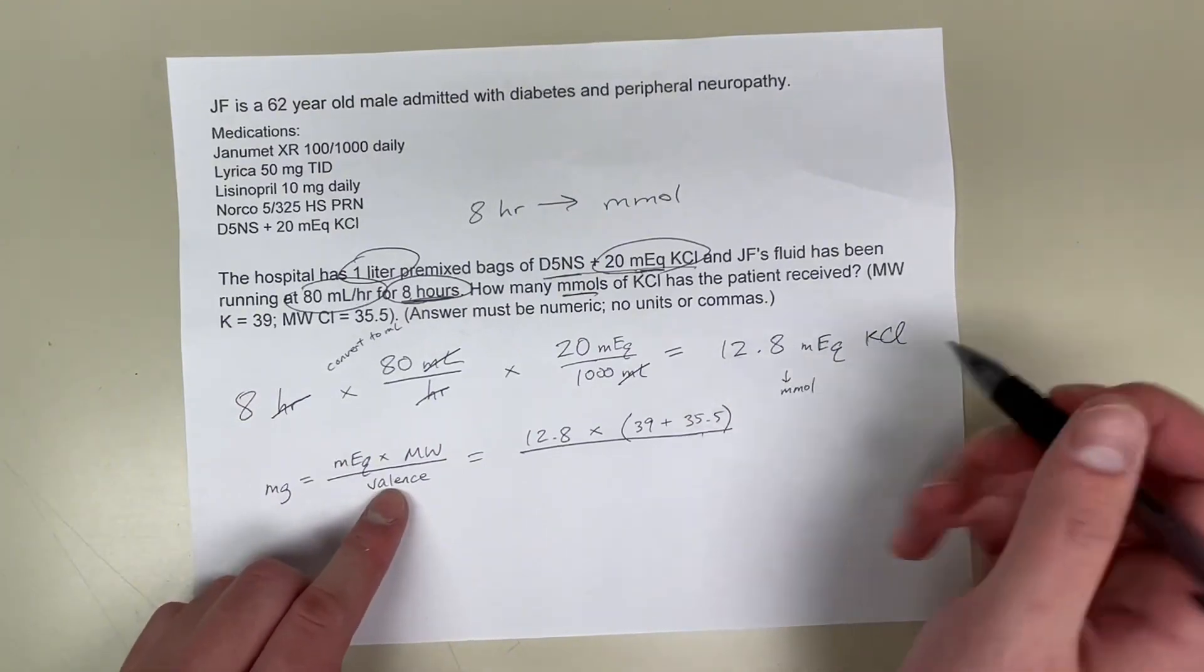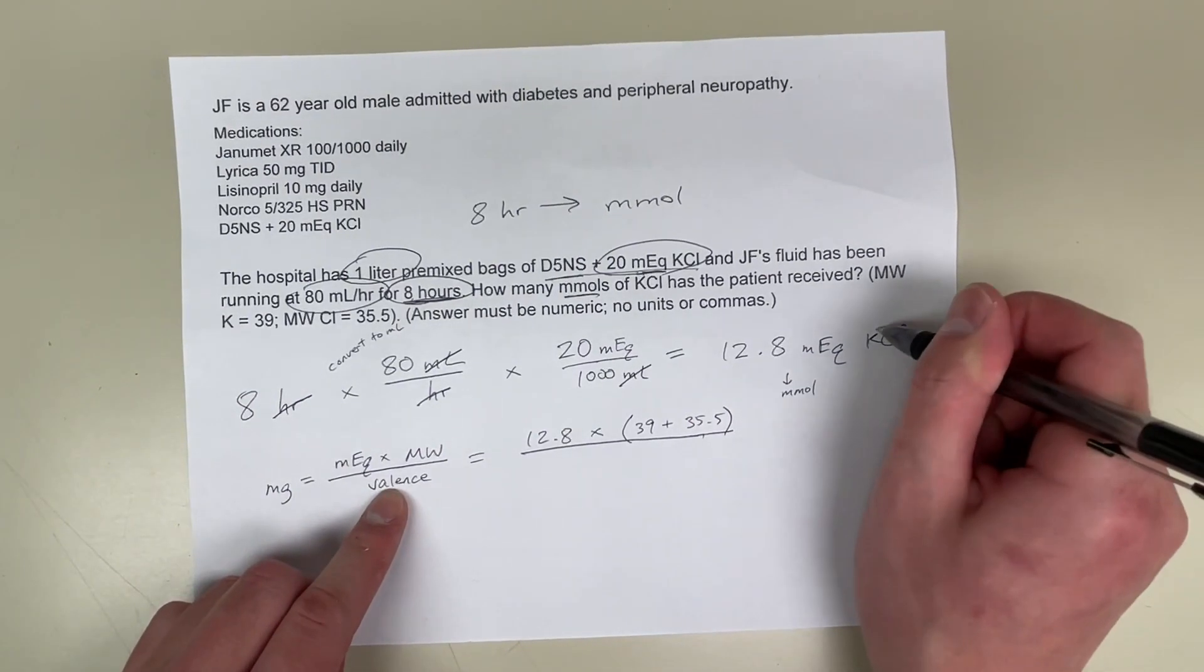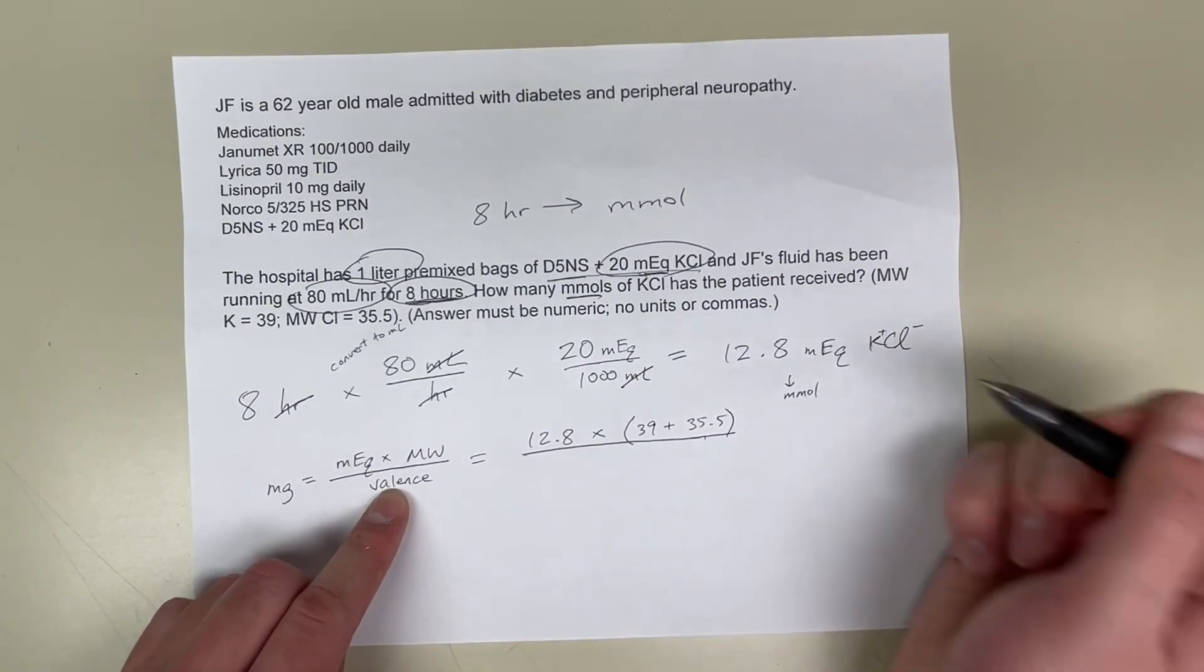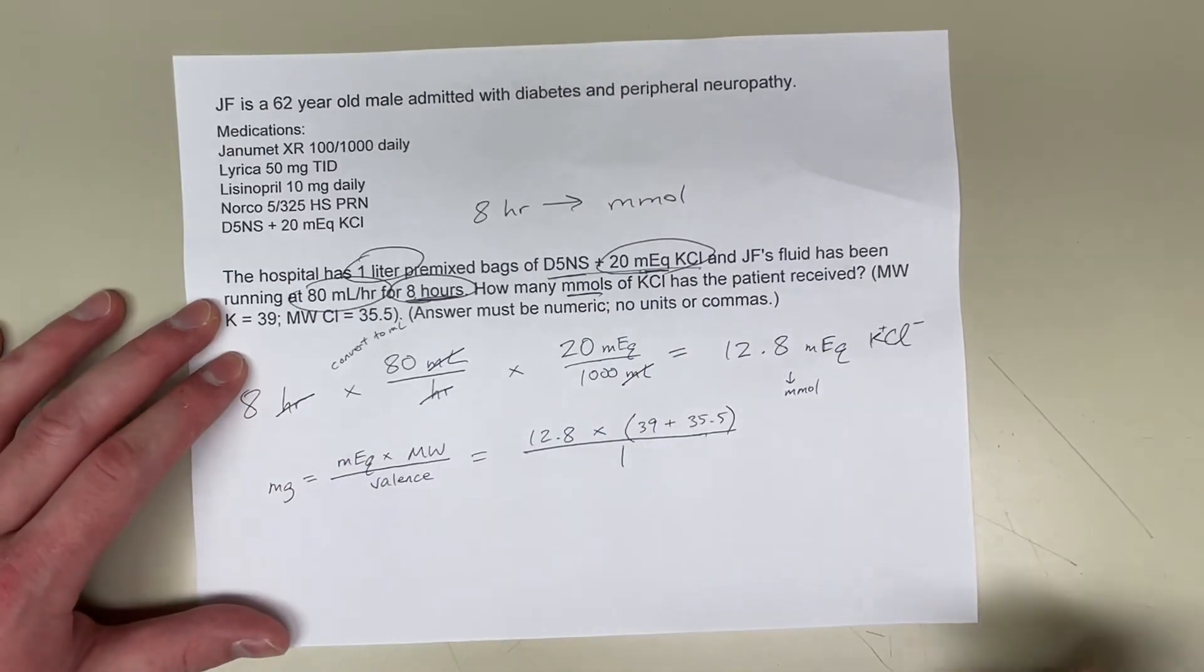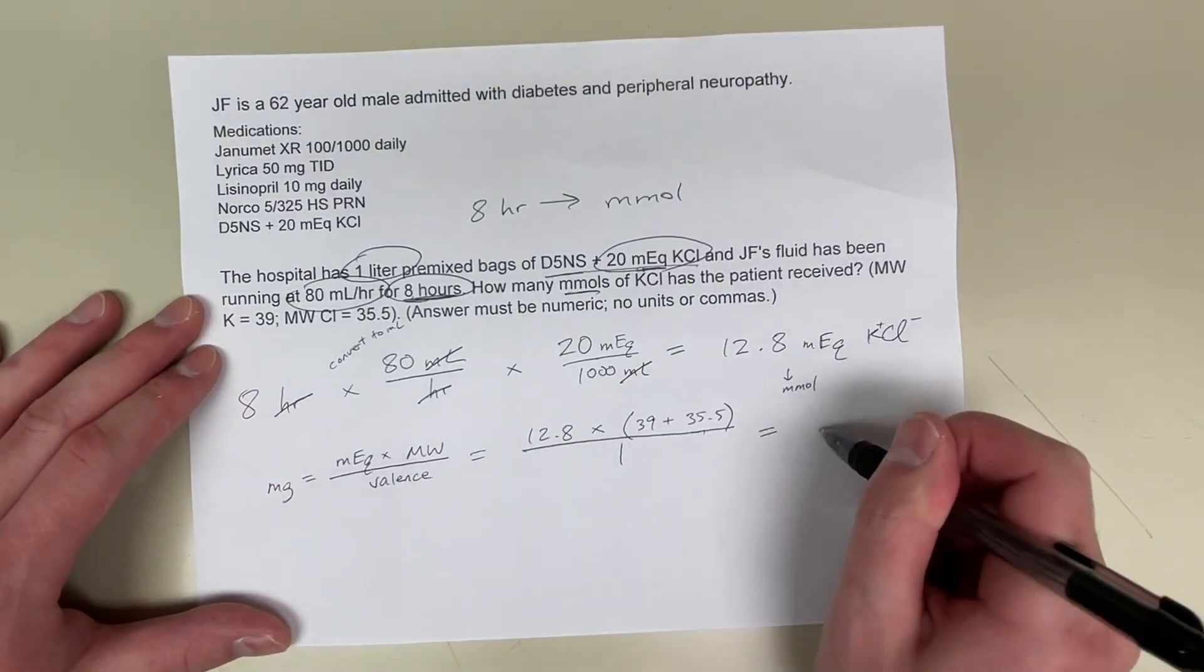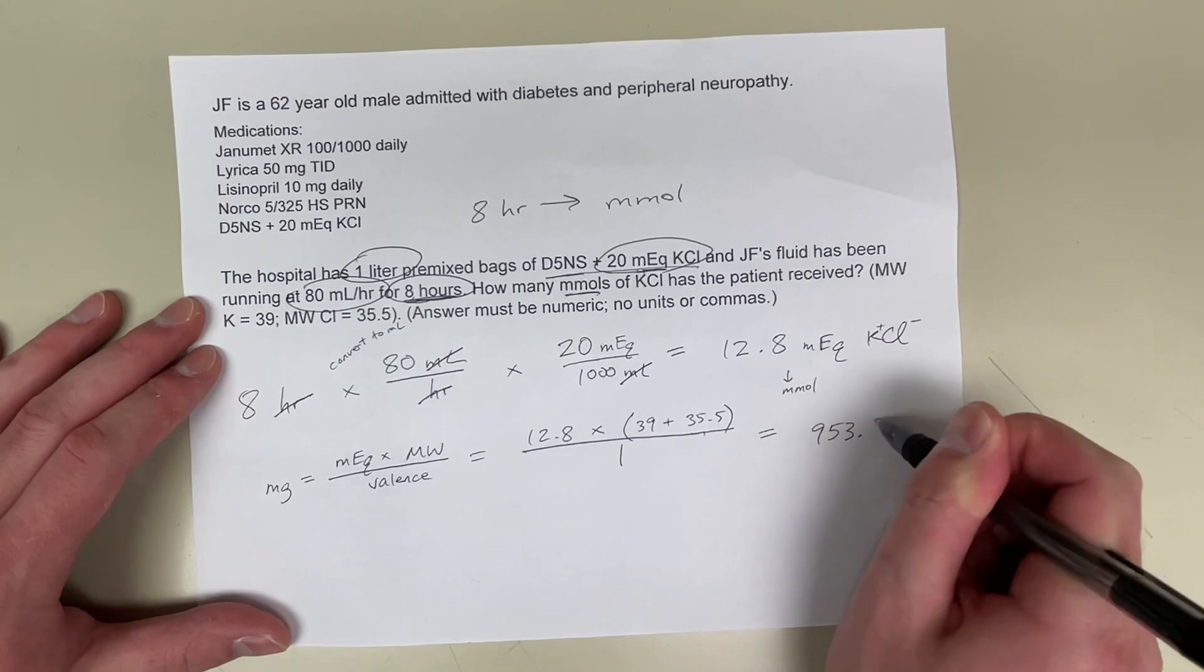All divided by my valence. So it's potassium plus 1 and chloride minus 1, so that's why the valence is just 1. So when I solve for that, I get 953.6 milligrams.